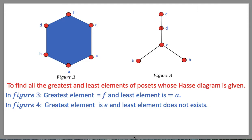An element a is called the least element of A if a is less than or equal to x for all x belonging to A. From this diagram we can see that the greatest element is f, because all other elements are less than this element, and a is the least element because all other elements are greater than a.